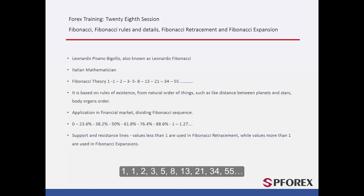The Fibonacci sequence is as follows: 1, 1, 2, 3, 5, 8, 13, 21, 34, 55, and so on.